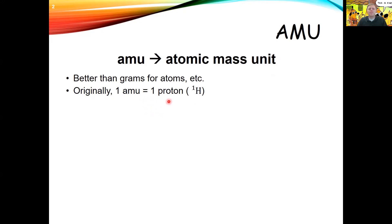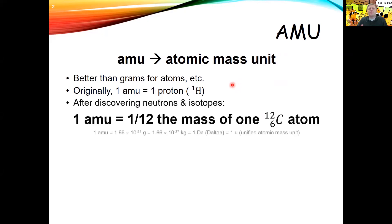Originally, 1 AMU was equal to the mass of a single proton. But after neutrons and isotopes were discovered, scientists agreed on a new definition: 1 AMU was equal to 1/12 the mass of one carbon-12 atom. With this new definition, 1 AMU is equal to about 1.66 × 10⁻²⁴ grams, or 1.66 × 10⁻²⁷ kilograms. That's also equal to 1 Dalton.